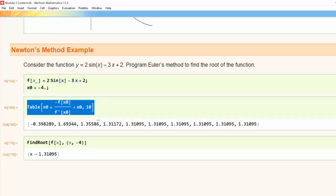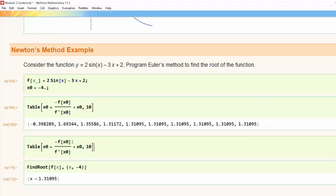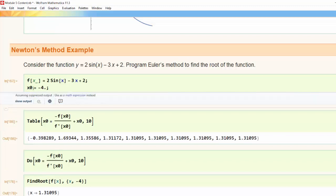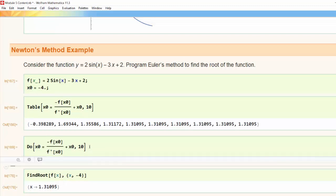Another way I could run that code is instead of using the table command to use the do command and in this context it's basically going to do the same thing as table it's just not going to build the list. So in this case if I ran my initialization cell once again starting x₀ at -4 and then I ran my command line with the do command in it it's gone through that algorithm 10 times it just hasn't returned that x₀ value.